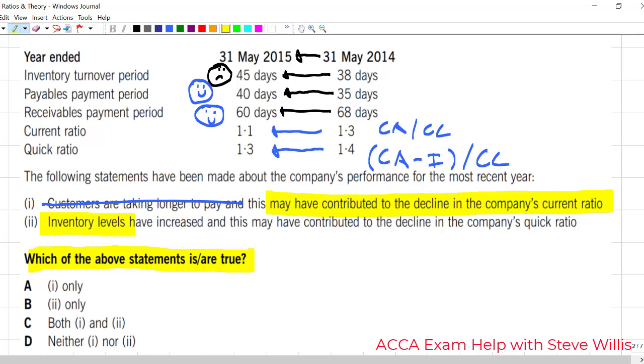Inventory levels have increased. If everything is equal except for the days, then yes, that would hold true. And this may have contributed to the decline in the quick ratio. Well, no. I'm going to cross that one out because quick ratio ignores the impact of inventory. So, neither statement is true.